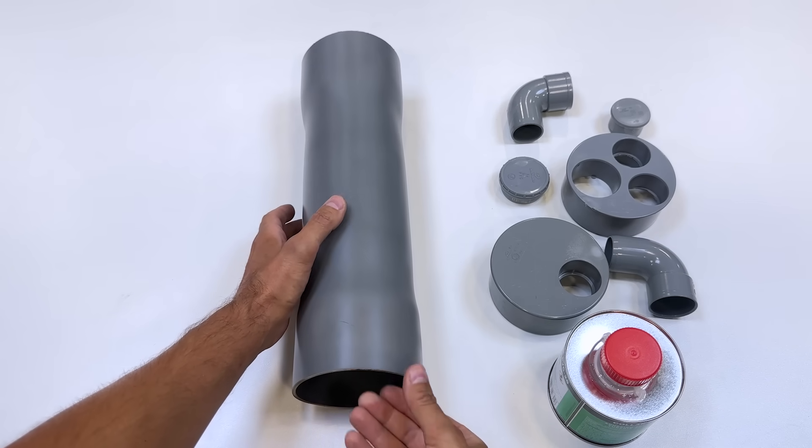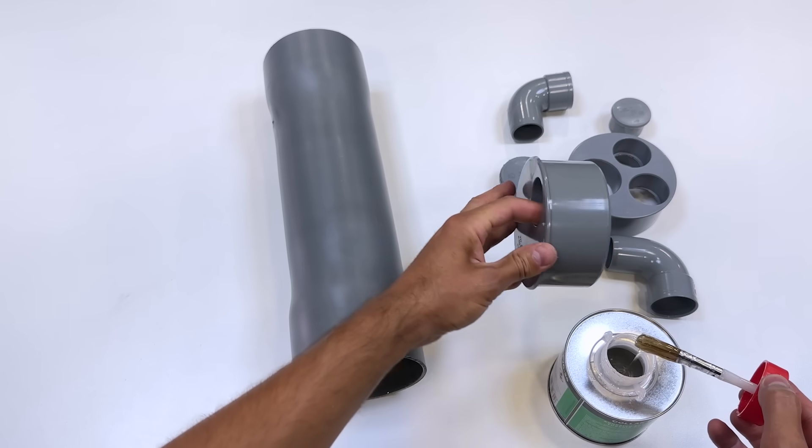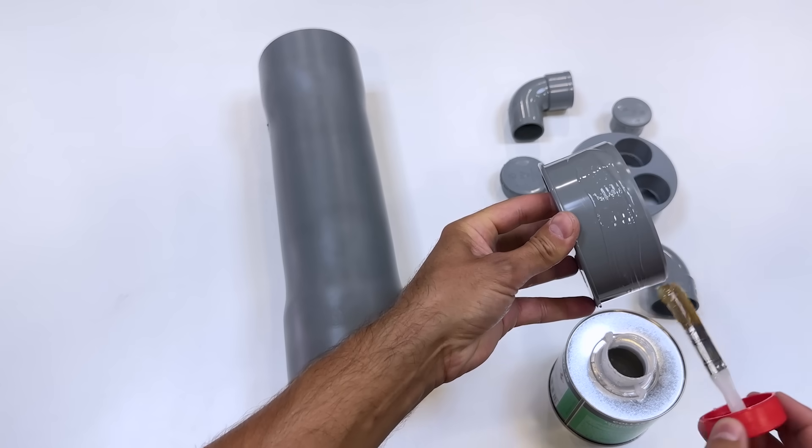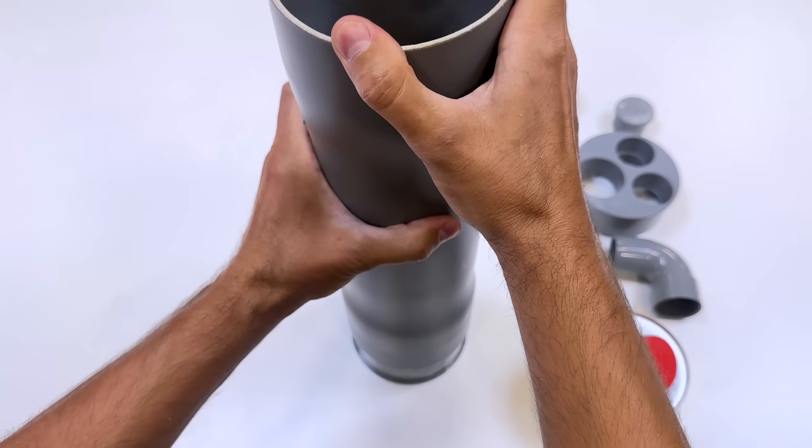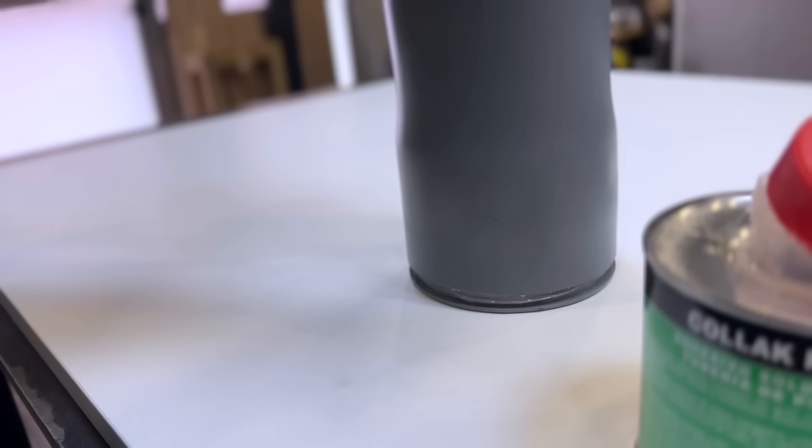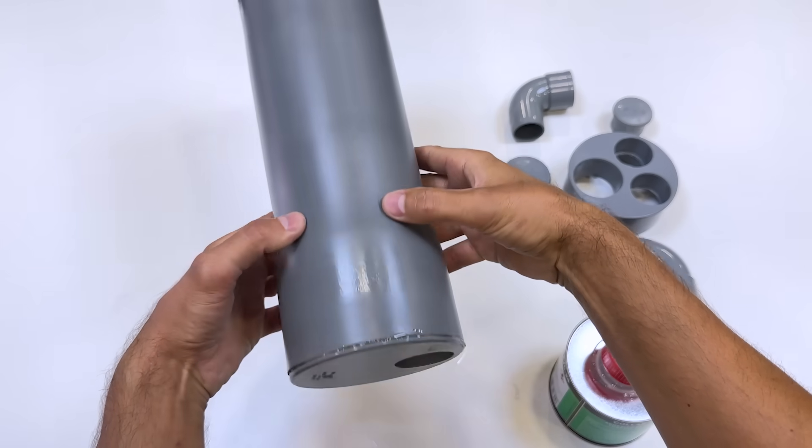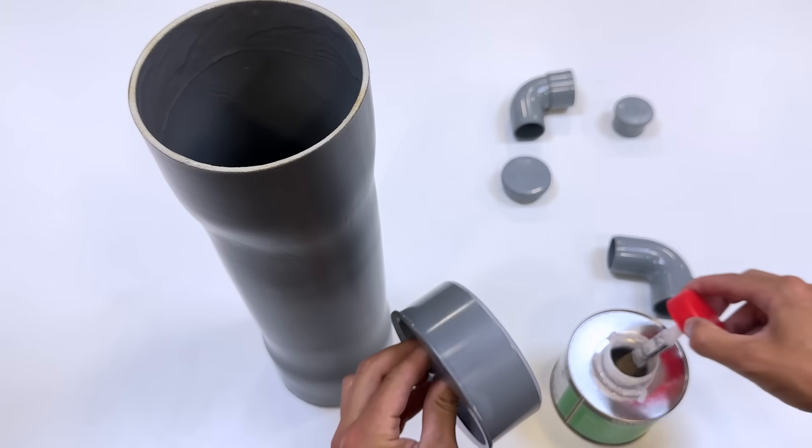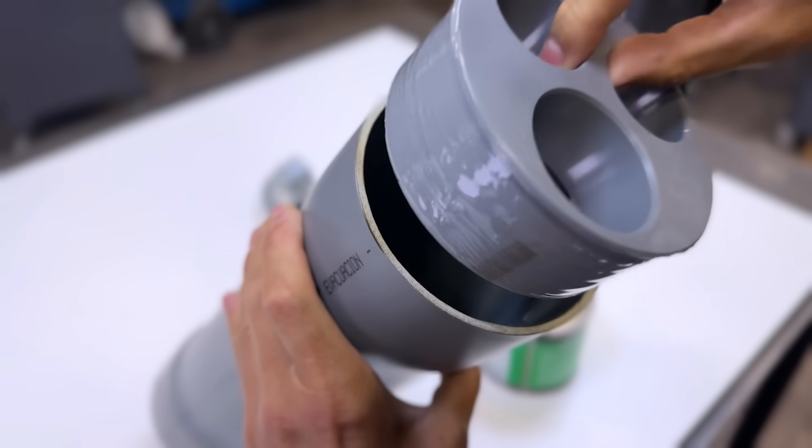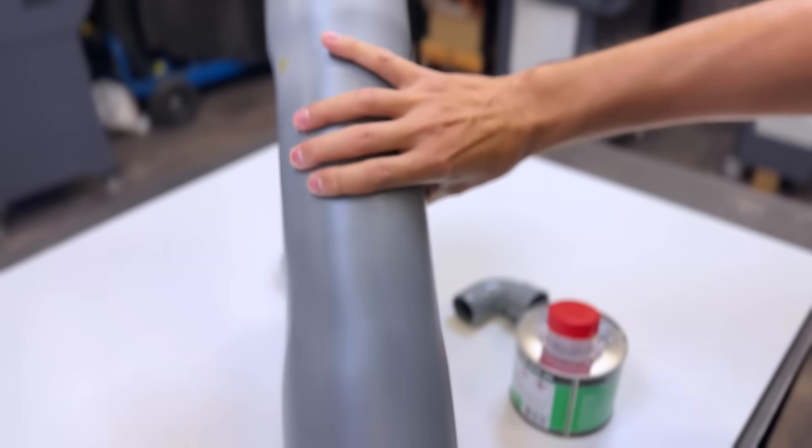Now we go back to the thick pipe from the beginning. We will assemble this 110 millimeter diameter plug with a 40 millimeter hole. At the other end we will assemble another 110 millimeter diameter plug with a 50 millimeter hole and two 40 millimeter holes.